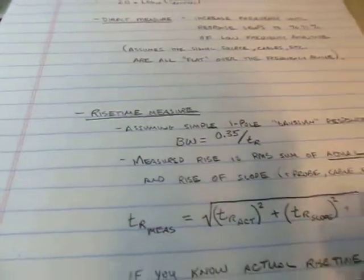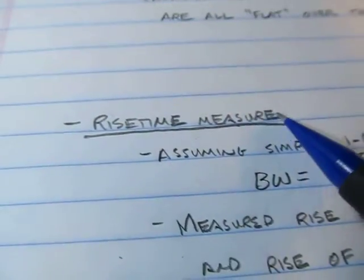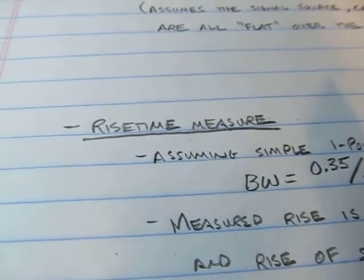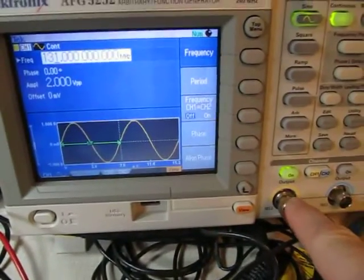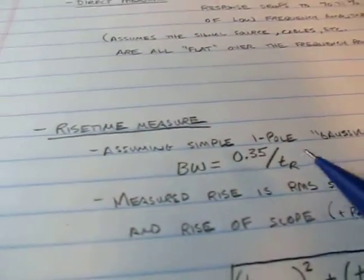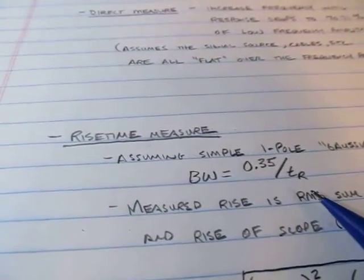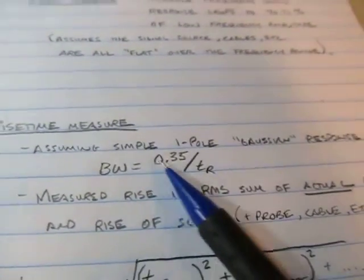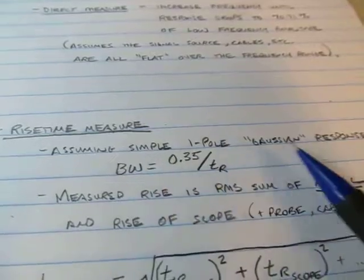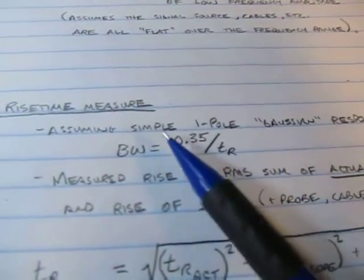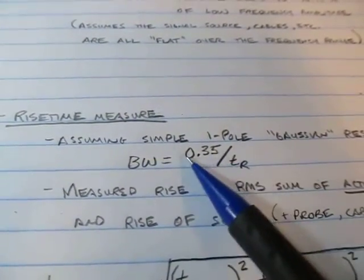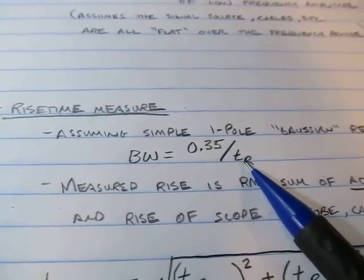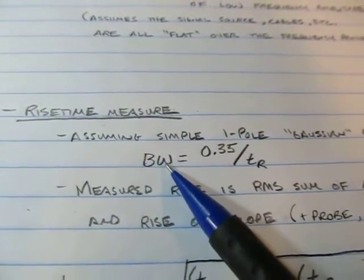Another way to estimate the bandwidth of the scope is to measure the scope's rise time. To do this, we have to make some assumptions. We either need to put in an extremely fast digital edge — really, really fast — or at least know how fast it is. It should ideally be significantly faster than the rise time of the scope. Assuming the scope has a simple Gaussian type of response, the equation basically holds: take the factor 0.35 divided by the actual measured rise time, and that gives you an estimate of the 3 dB bandwidth.